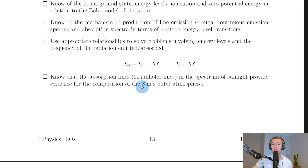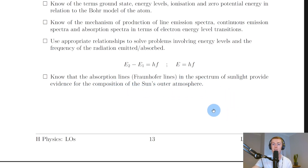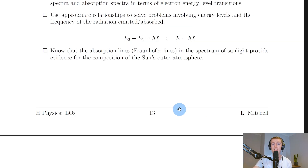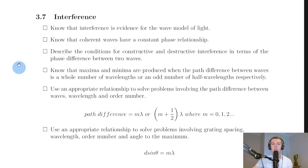Lastly for spectra, the absorption lines — also known as Fraunhofer lines — in the spectrum of sunlight provide evidence for the composition of the sun's outer atmosphere. By looking at the spectrum of sunlight we can tell what elements the outer atmosphere is made up of, since each element has its own unique line spectrum.